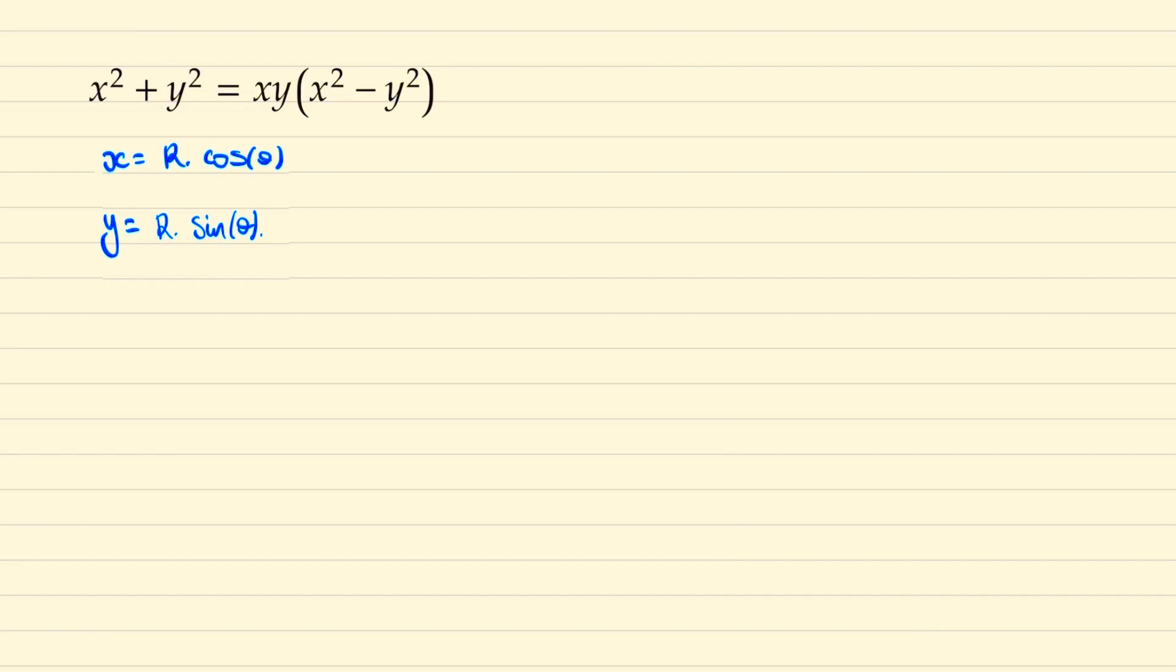And thus substituting this into our equation, x squared plus y squared becomes r squared cos squared plus r squared sine squared, which is just r squared. And the right side becomes r squared times cos theta sine theta multiplied by r squared times cos squared theta minus sine squared theta.